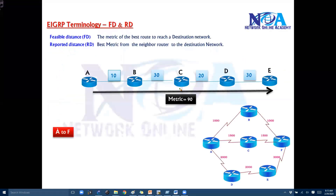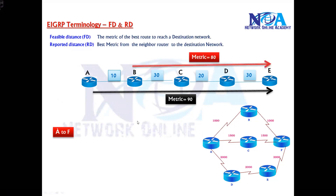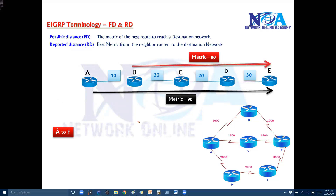So when EIGRP calculates, there are two different metric values used here, and based on that there are a few conditions. The total distance or total cost of the best route is called feasible distance. The metric used by the neighbor to reach that particular destination is called reporting distance.